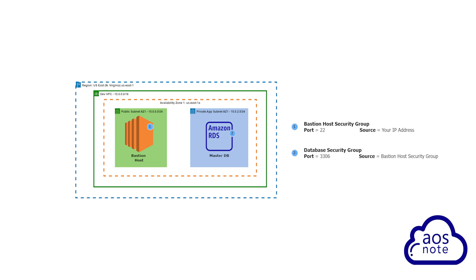Hello and welcome back to another lecture. To use PlyWay to migrate data into an RDS instance in the private subnet, you need two security groups.